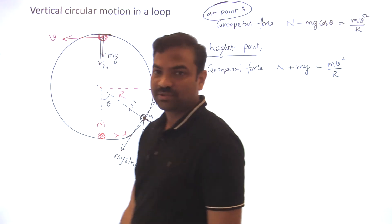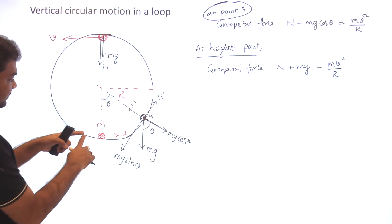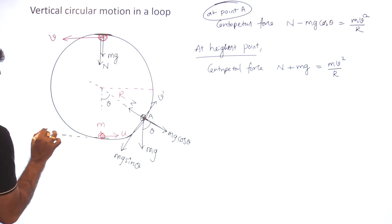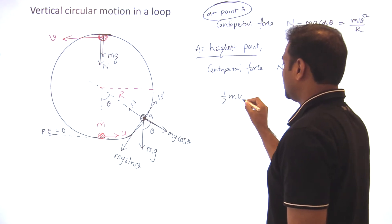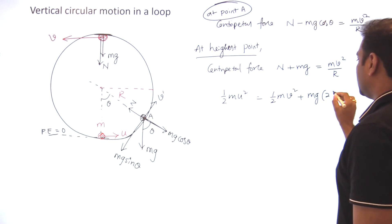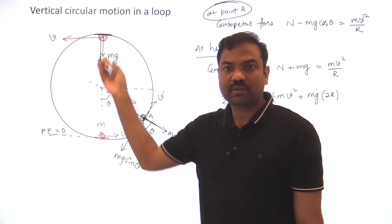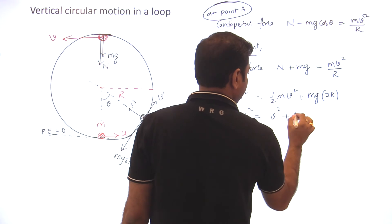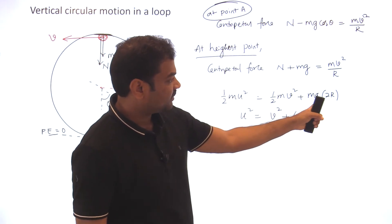I'm writing velocity at the highest point as v dash. N plus mg = mv²/r, because both N and mg act towards the center at the highest point. Using energy conservation from the bottom to the highest point — taking the bottom as zero potential energy level — I get: half mu² = half mv dash² + mg(2r). Cancelling m: u² = v dash² + 4gr.